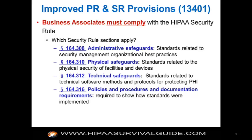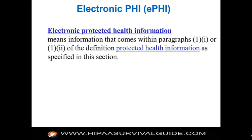Previously, business associate duties and responsibilities were attached to the contract with the covered entity. HITECH changed that — business associates are now liable statutorily for complying with the security rule. The relevant sections are: 164.308 administrative safeguards, 164.310 physical safeguards, 164.312 technical safeguards, and 164.316 policies and procedures — which is really the substantive part of the security rule.